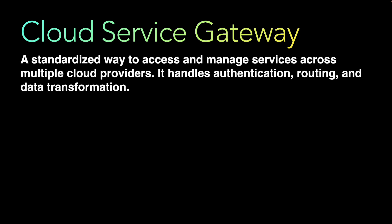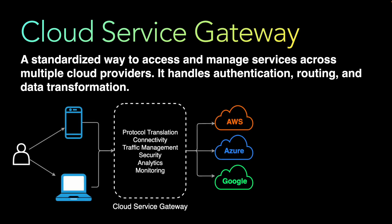The cloud services gateway provides a standardized way to access and manage services across multiple cloud providers like AWS, Azure, and Google Cloud. There are multiple cloud providers today, each offering varied types of solutions and services. As an application or solution builder, you can integrate with multiple cloud services and use them as building blocks to tie together different components and build your own application.